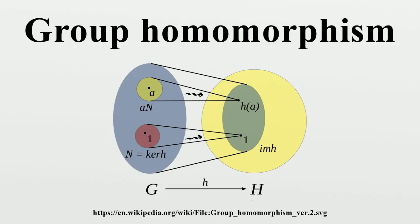Automorphism - an endomorphism that is bijective, and hence an isomorphism. The set of all automorphisms of a group G, with functional composition as operation, forms itself a group, the automorphism group of G. It is denoted by Aut(G).